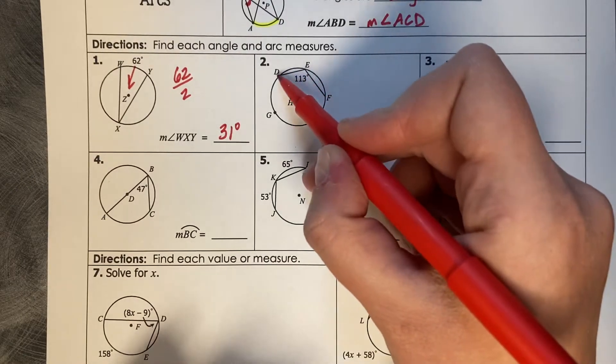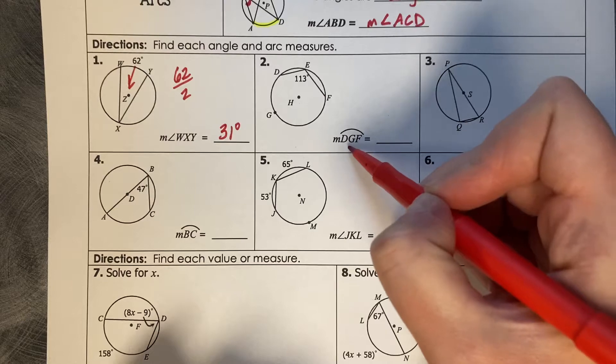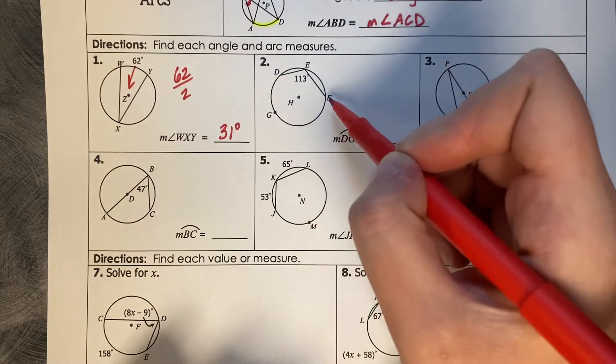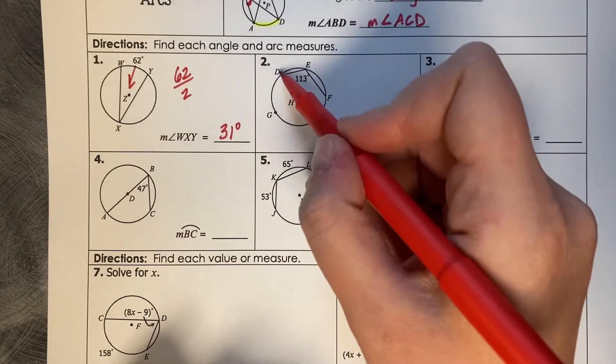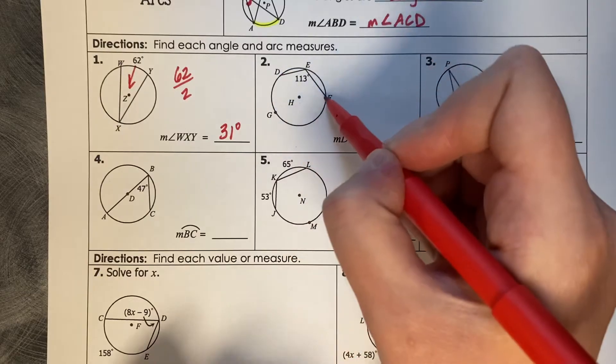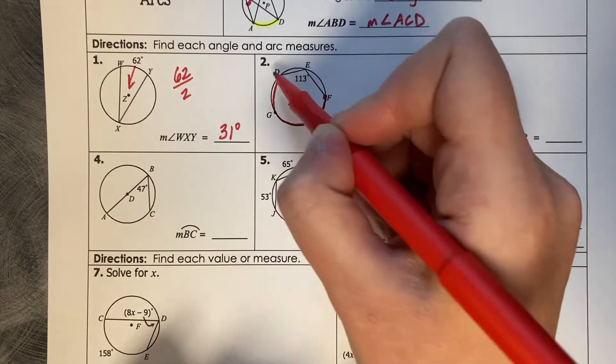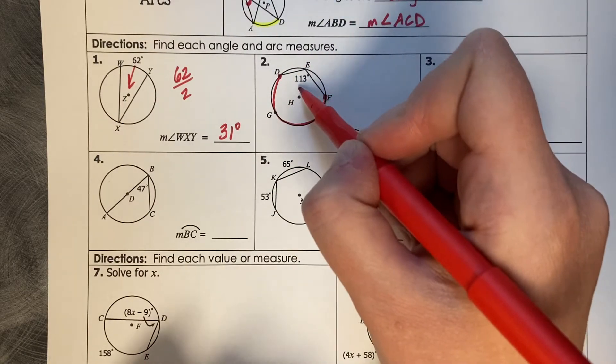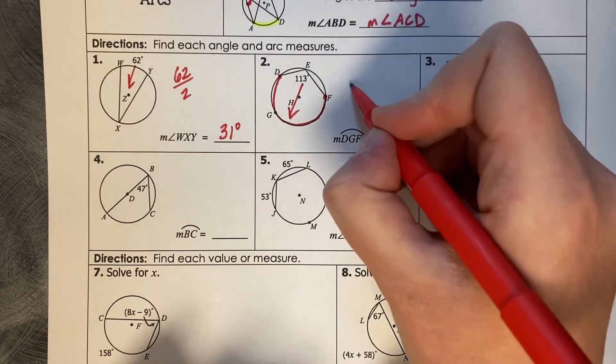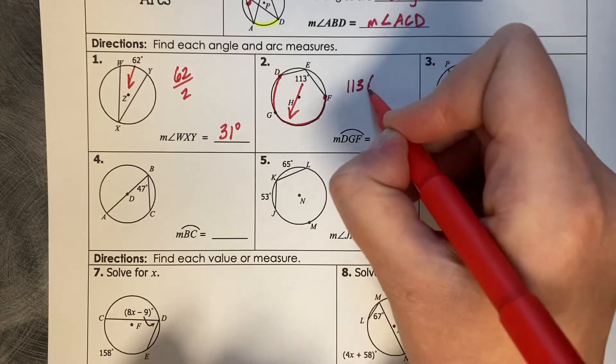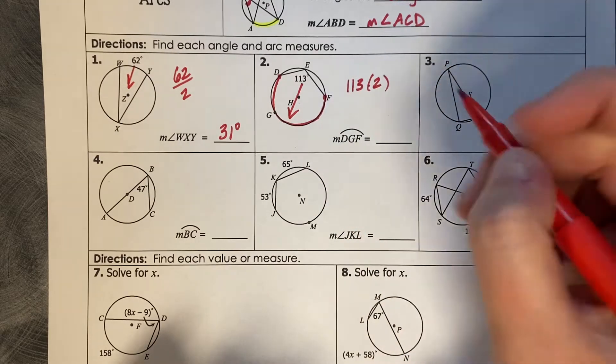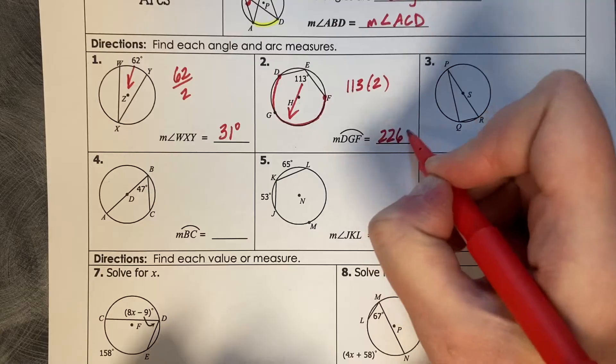All right, we know the inscribed angle DEF, and we'd like to know arc DGF. And it's three letters, so that's a major arc, D to G to F, all the way around. So this whole arc here. So if we're going from the inscribed angle out to its arc, we multiply by 2. So 113 times 2, which is going to be 226 degrees.